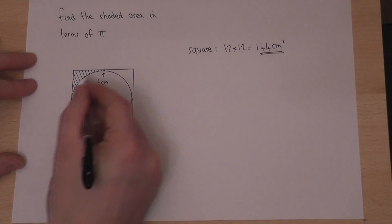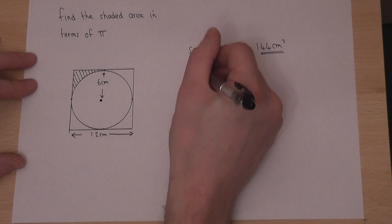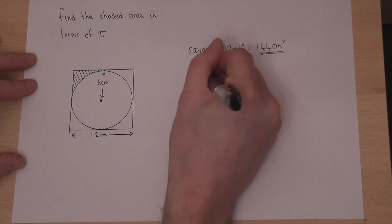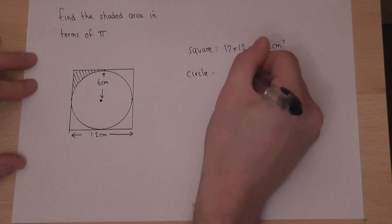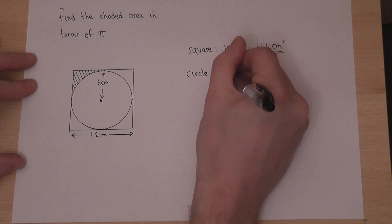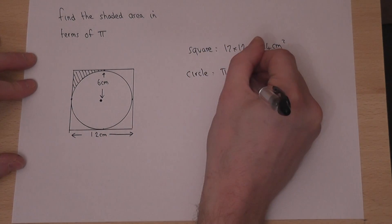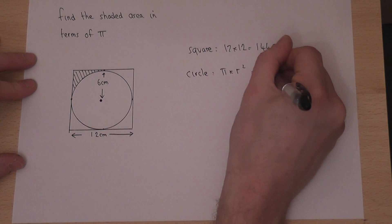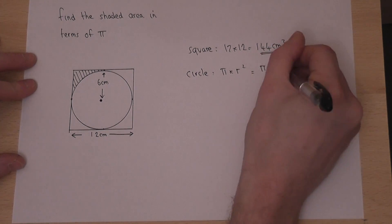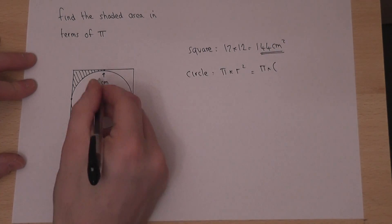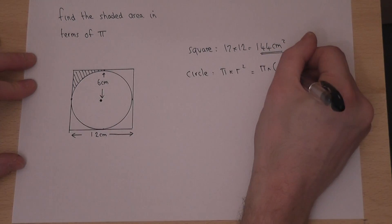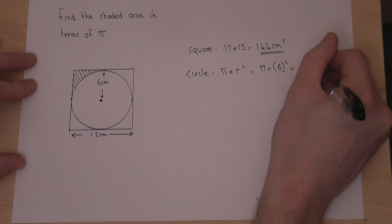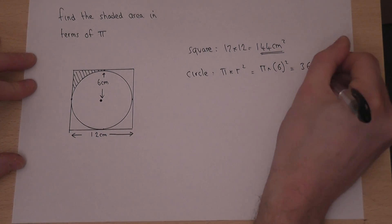The circle must have an area given by pi times radius squared. This is the radius — pi times 6 squared, which is 36 pi.